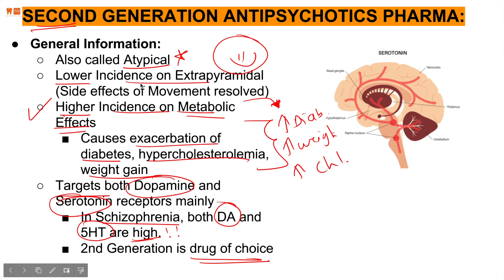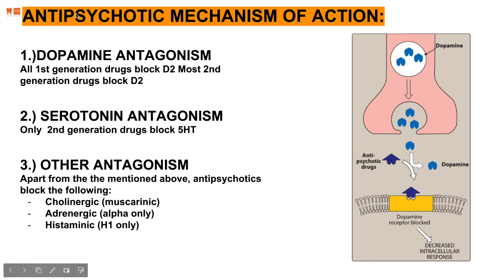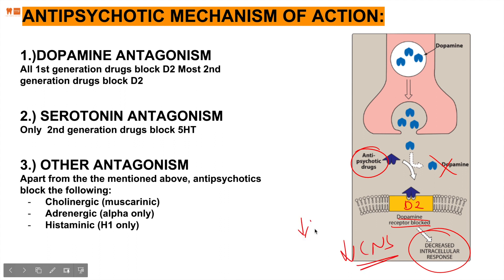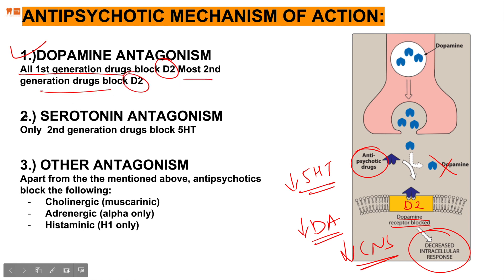The mechanism of action involves competitive binding at D2 receptors, preventing dopamine from acting at those receptors and leading to a decrease in intracellular response — CNS activity goes down, dopamine goes down, and in some cases serotonin goes down as well. For dopamine antagonism: all first generation drugs block D2; most second generation drugs block D2; only second generation drugs block serotonin receptors. Other antagonism includes cholinergic, adrenergic, and histaminic blockade — anti-muscarinic, anti-alpha adrenergic, and anti-histaminic actions.